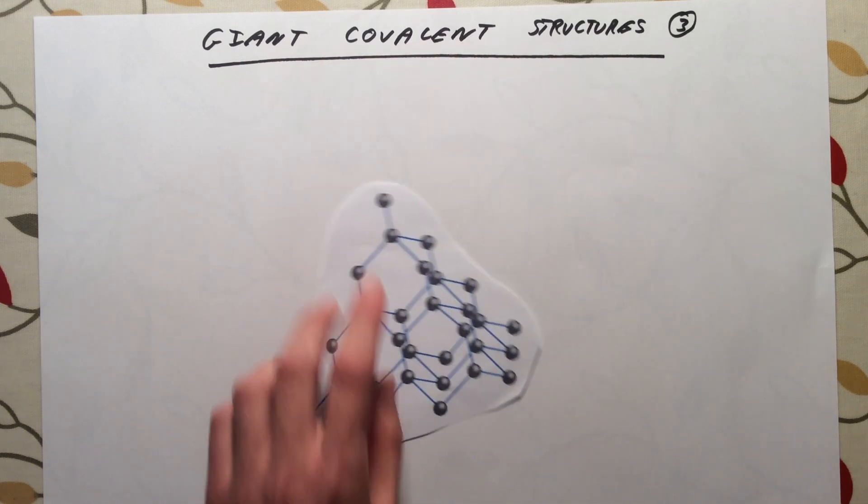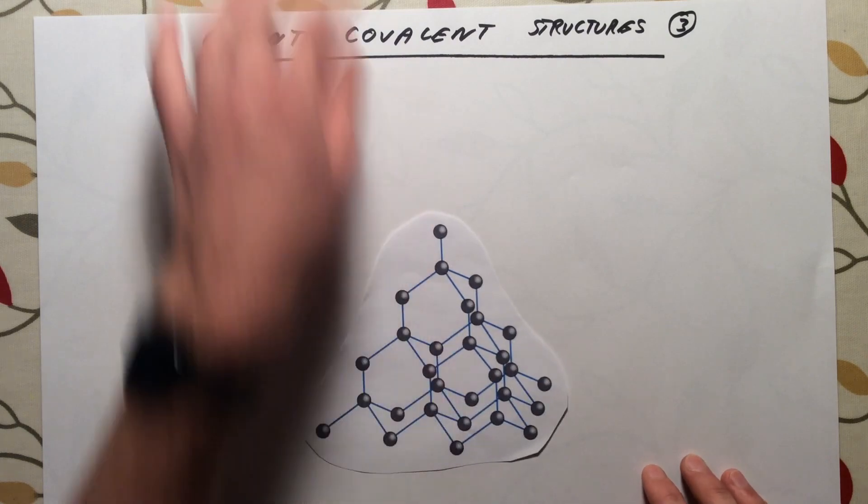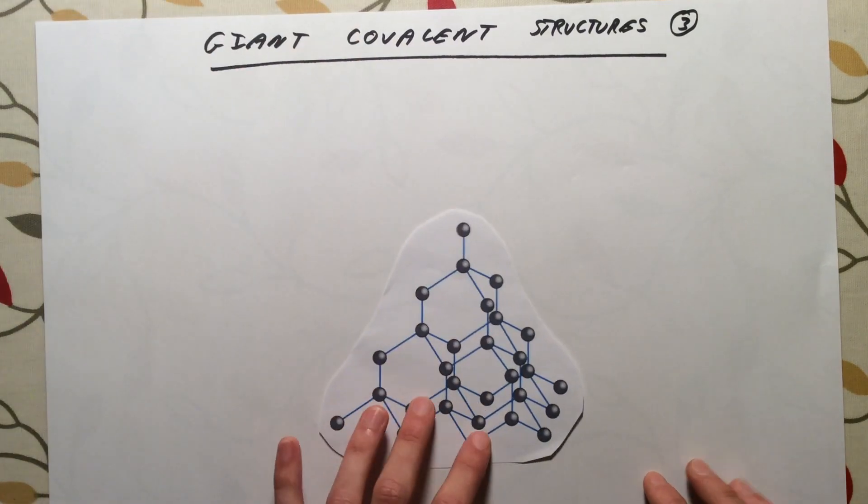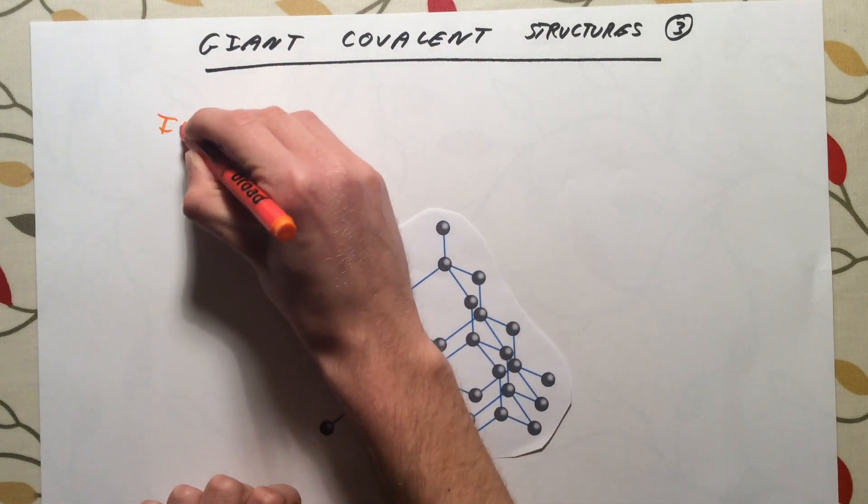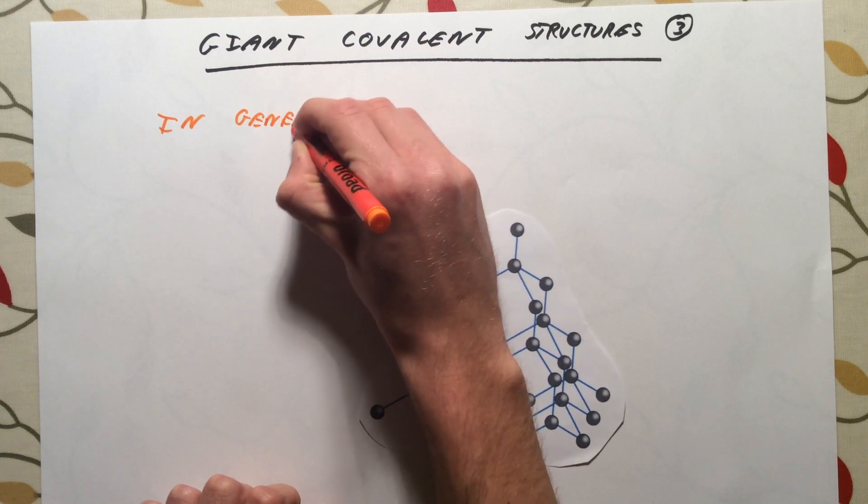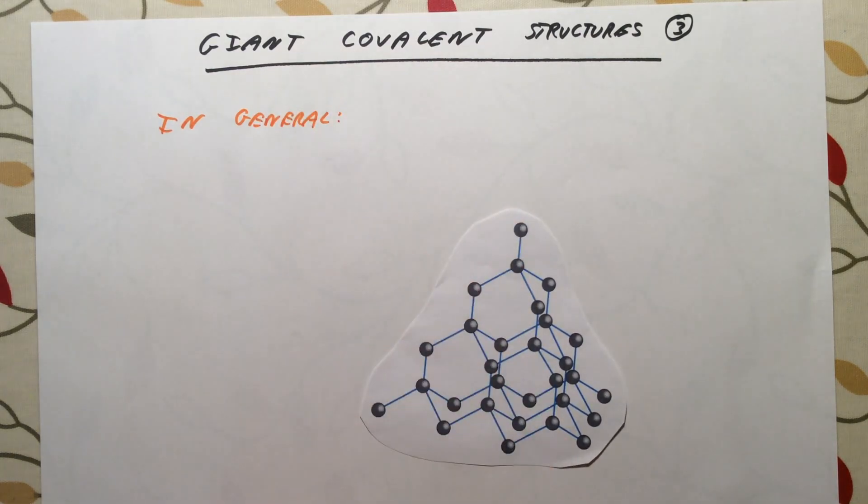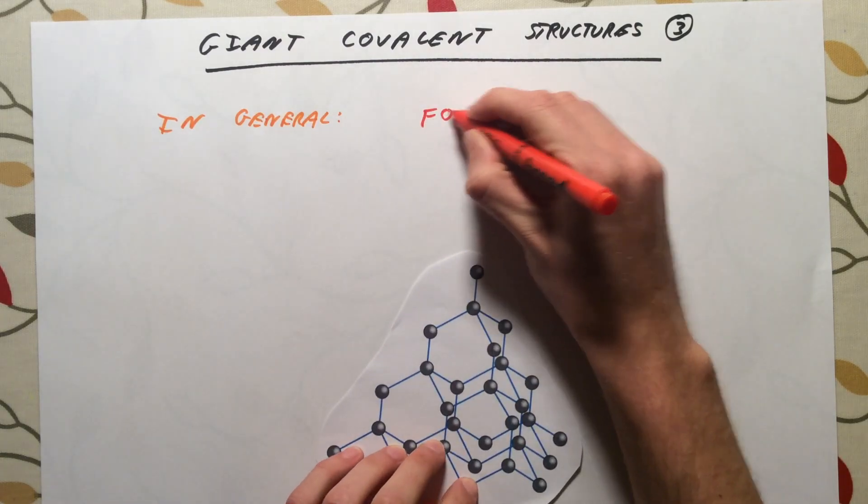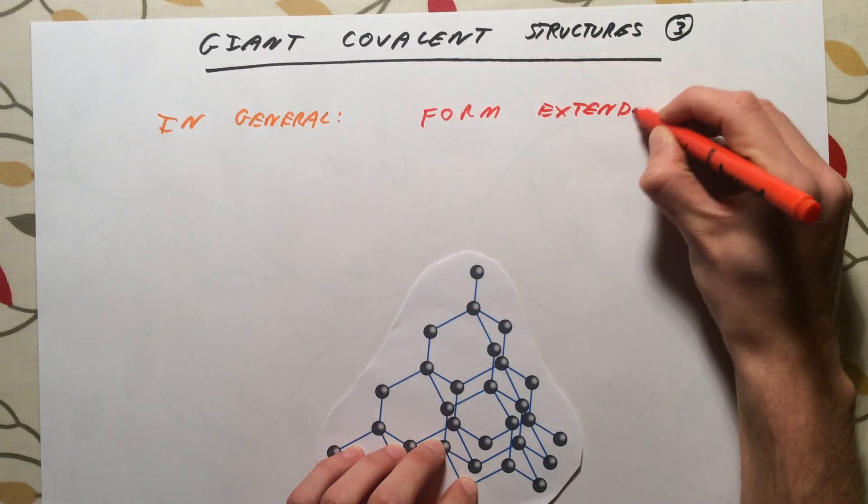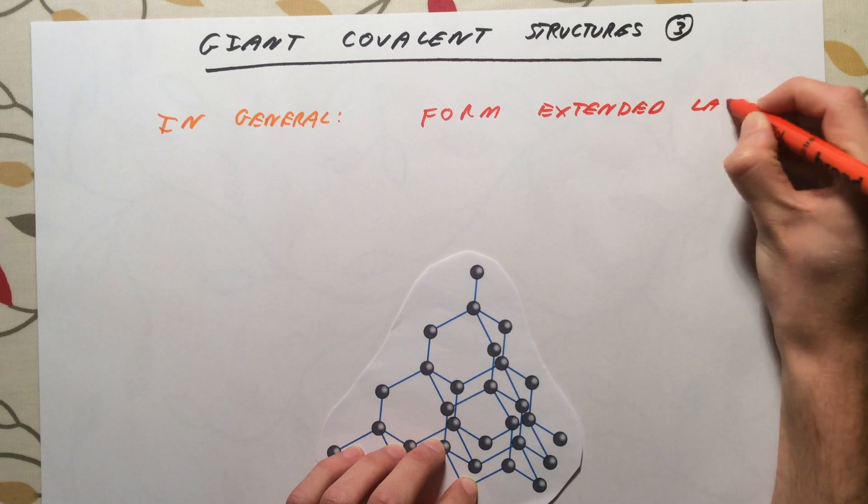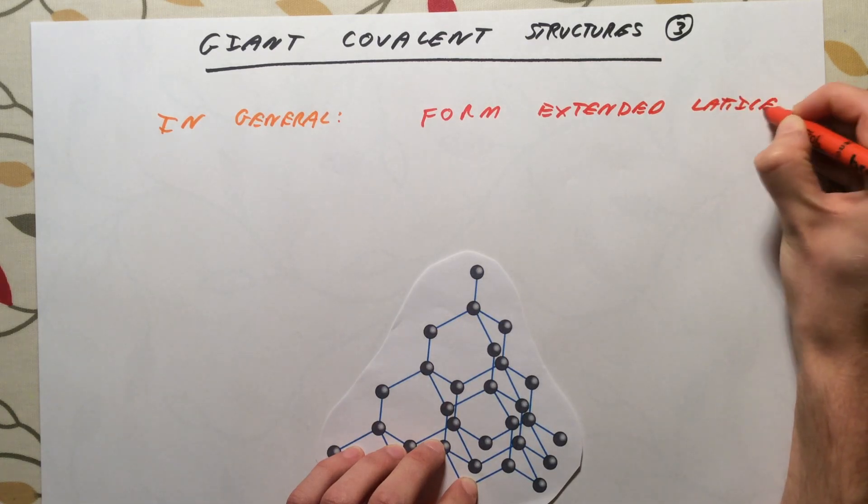Because we don't have separate molecules of these, for any giant covalent structure there are some features which they have in common. In general, giant covalent structures form extended lattice structures.